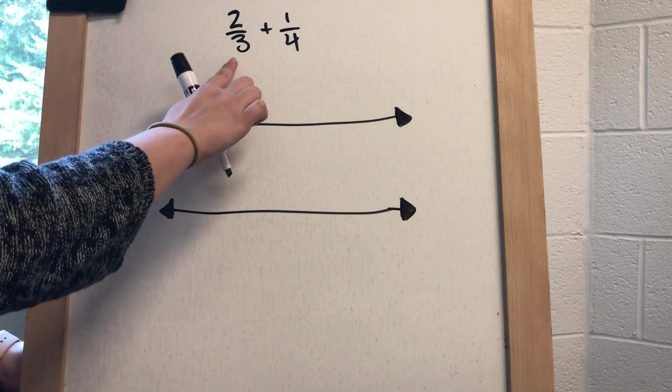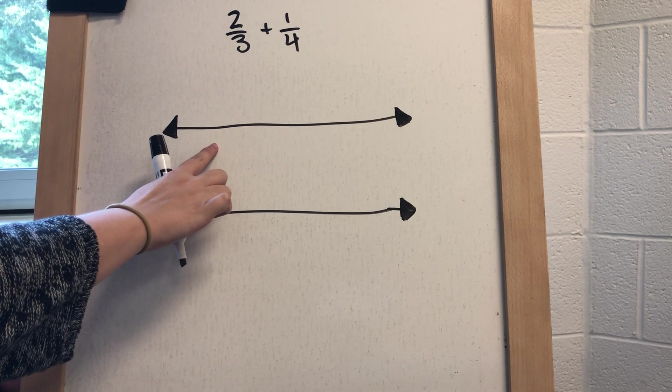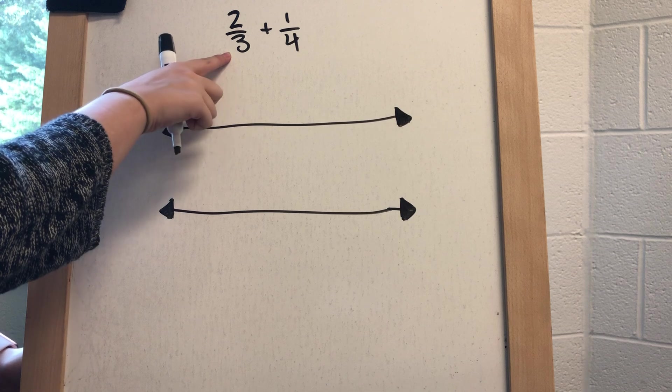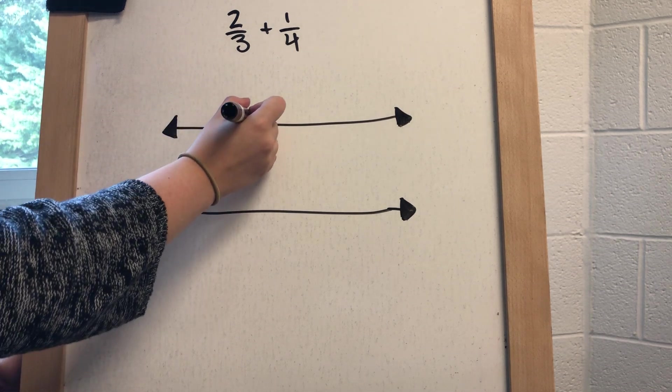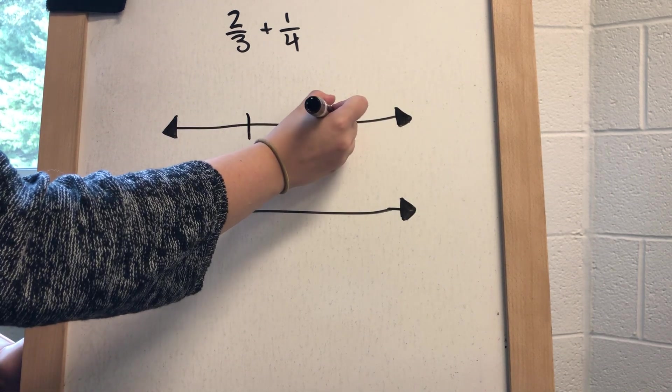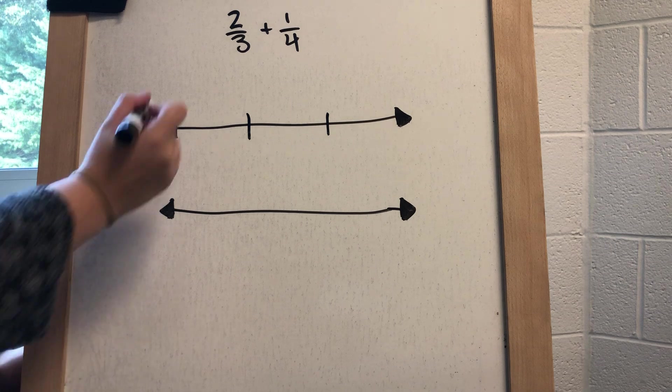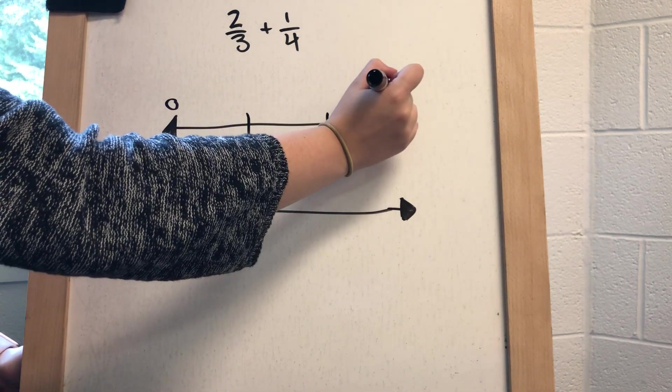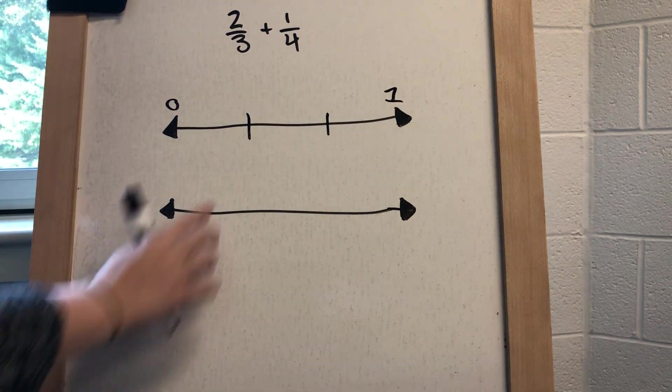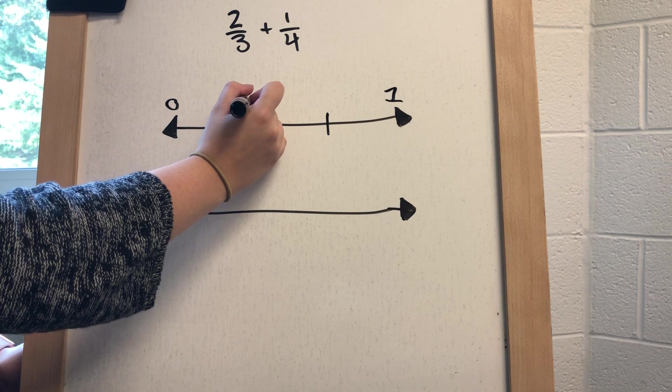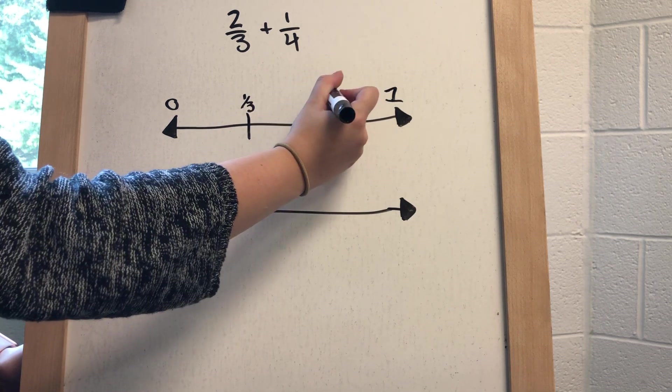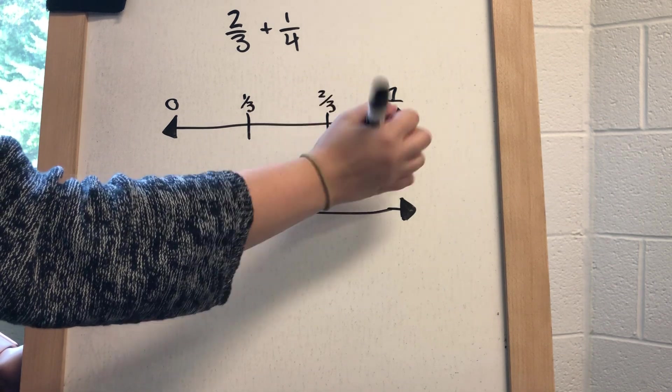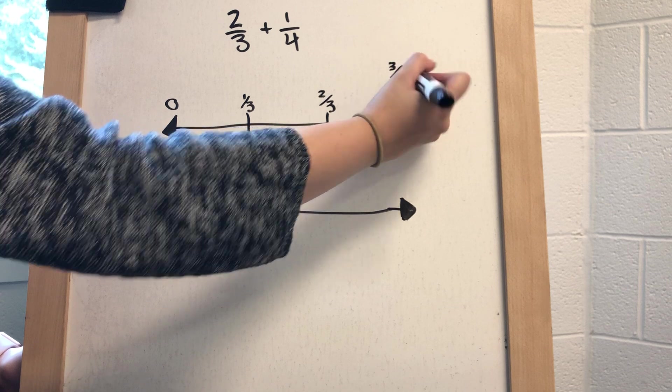For the first number, you're going to start with the top number line and I'm just going to show two-thirds on that number line. I'm going to do that by making this zero, this is one. Right here is one-third and right here would be two-thirds. Obviously one whole would be three-thirds.